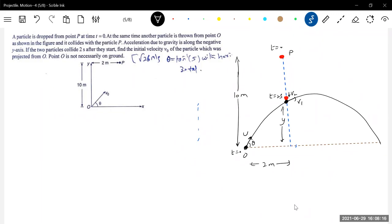How much height the stone two will... this is one. What height the stone two will descend? 10 minus y.